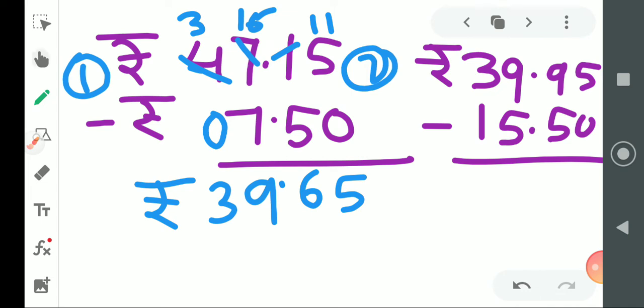₹39.95 minus ₹15.50. 5 minus 0 is 5. Next one, 9 minus 5 is 4. Then point. Then 9 minus 5 again is 4. And 3 minus 1 is 2. So the answer is ₹24.45.